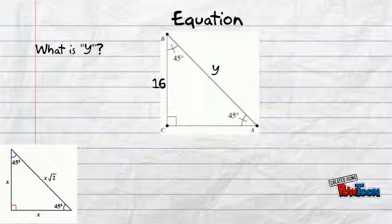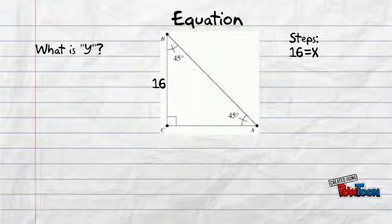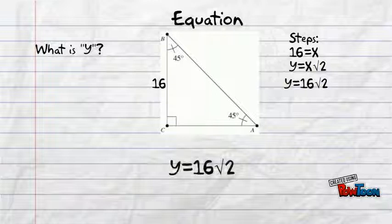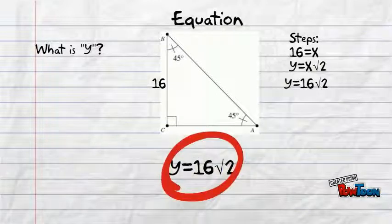In this triangle, the x value is 16. So, to find y, we simply multiply by square root 2. To get an exact measurement, just leave the answer as 16 root 2 instead of finding the square root of 2 and multiplying it by 16.